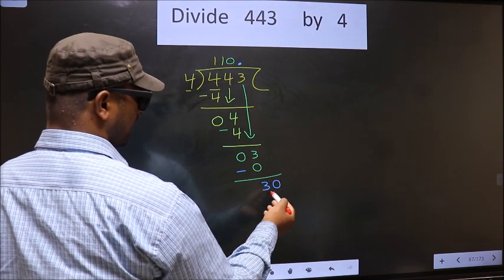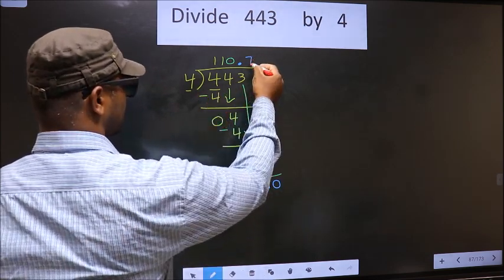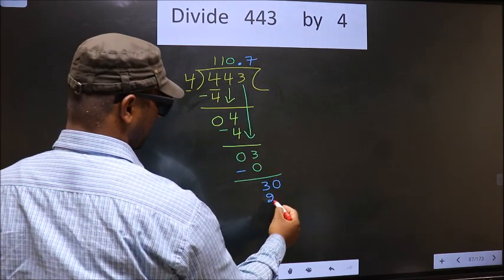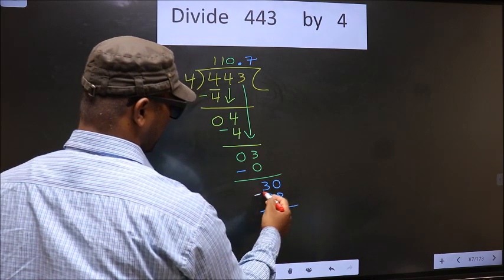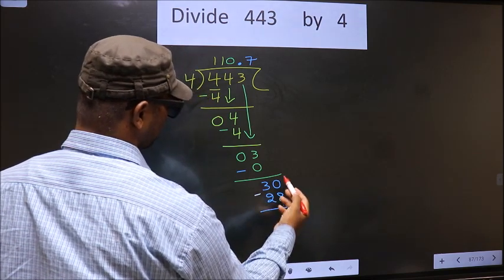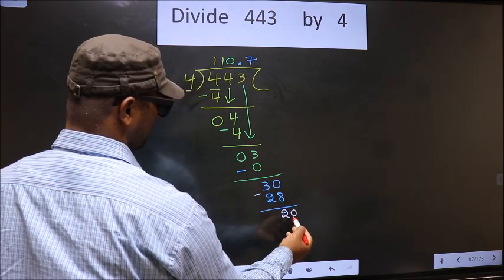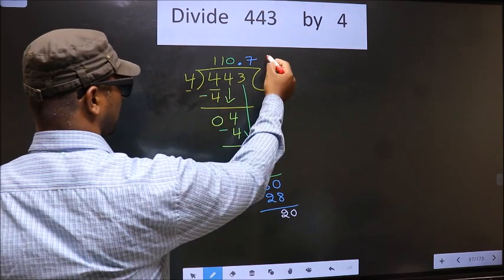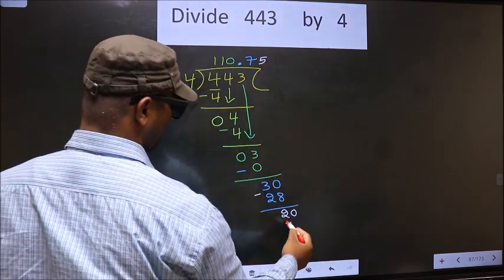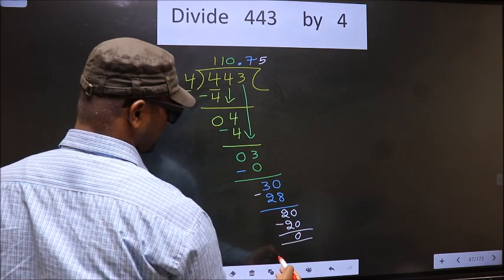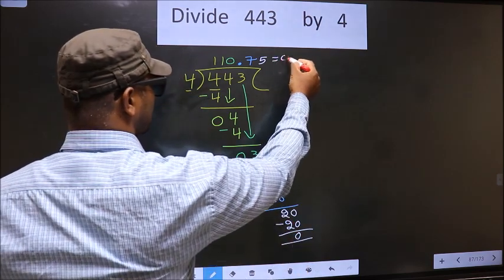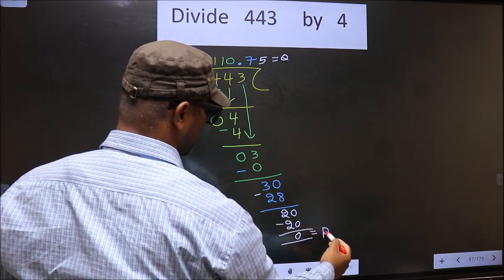So 30. A number close to 30 in the 4 table is 4 sevens, 28. Now you subtract: 30 minus 28 is 2. The decimal is already there, so you take 0. When do we get 20 in the 4 table? 4 fives is 20. You subtract and get 0. So this is our quotient, and this is our remainder.